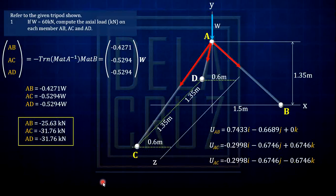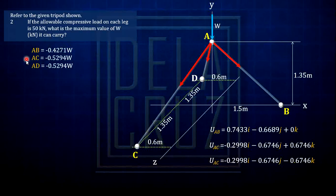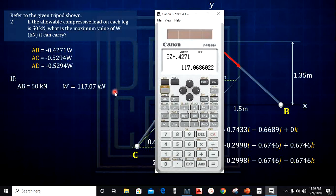Let's proceed to number 2. If the allowable compressive load on each leg is 50 kN, what is the maximum value of W it can carry? Using the results in terms of W from before: if AB = 50 kN, then 50 = 0.4271 × W, so W = 50 ÷ 0.4271 = 117.07 kN.